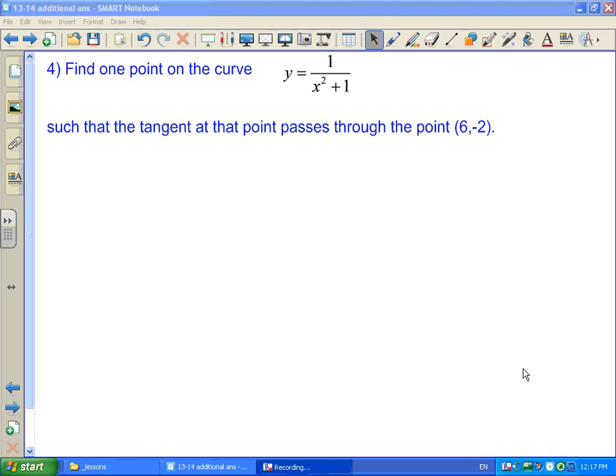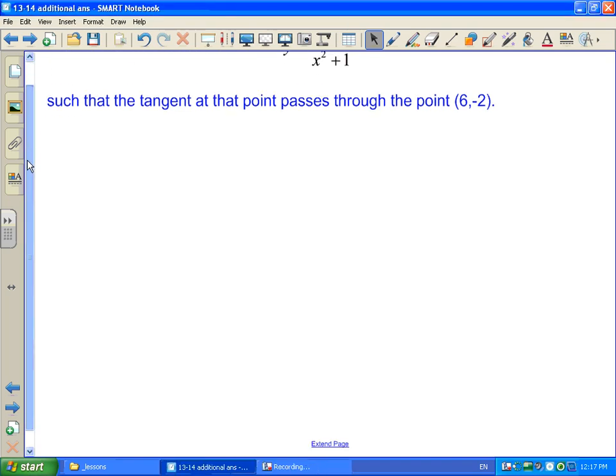Okay, trickiest question in the bunch here. Find one point on the curve y equals 1 over x squared plus 1 such that the tangent at that point passes through the point (6, -2). This question is trickier than anything you're going to see on the test, so if you couldn't get it, don't worry about it, but let's just look at how you would do this question here.